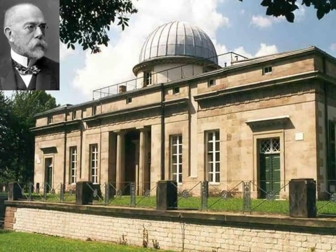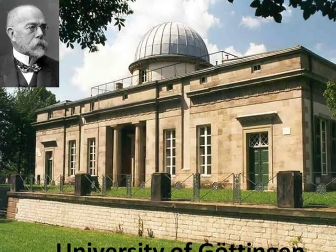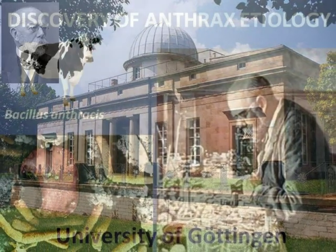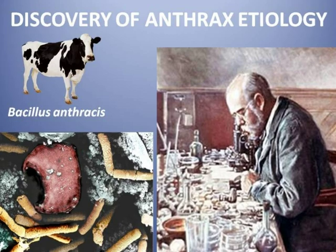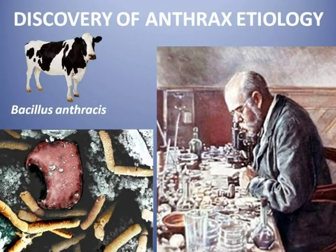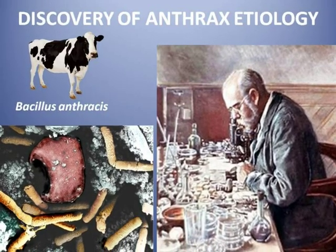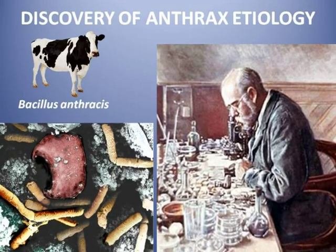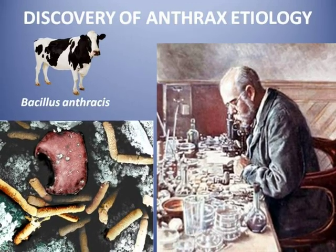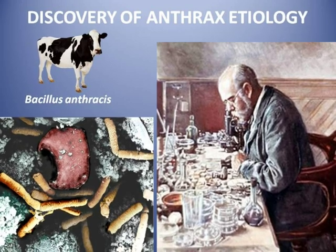Koch went to the University of Göttingen to study medicine from 1862 to 1866. In 1876, Koch proved that the bacillus anthracis is the cause of anthrax. He inoculated mice with the bacilli isolated from dead cattle, and the mice developed the disease and died.